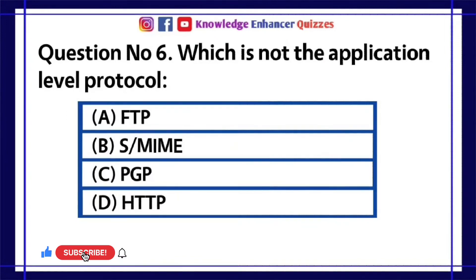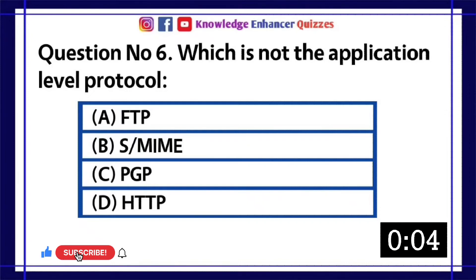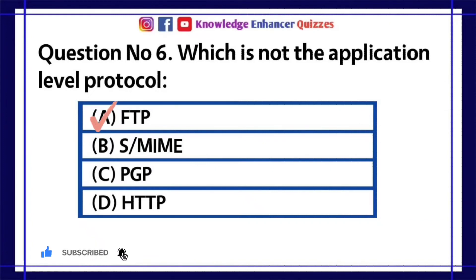Question number 6: Which is not the application level protocol? A. FTP, B. SMIME, C. PGP, D. HTTP. Option A is the right answer.